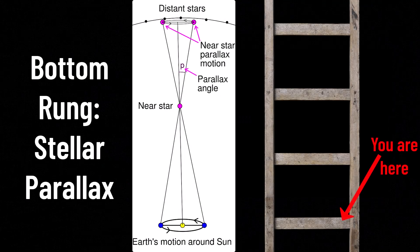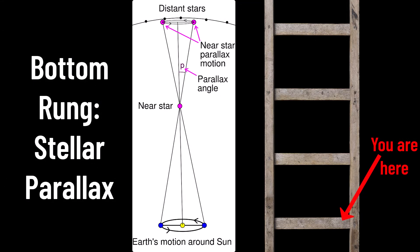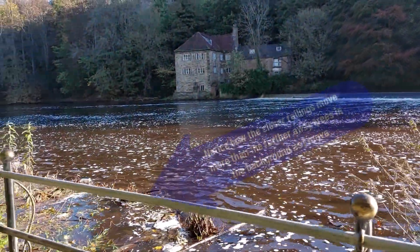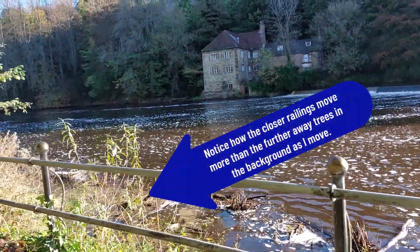Let's start off with the first rung on the cosmic distance ladder, which is almost certainly the most important for reasons you'll see why soon. The method scientists can measure the distance to nearby stars up to a few hundred parsecs is through parallax. Parallax isn't just limited to stellar distances, everyone has experienced parallax before.